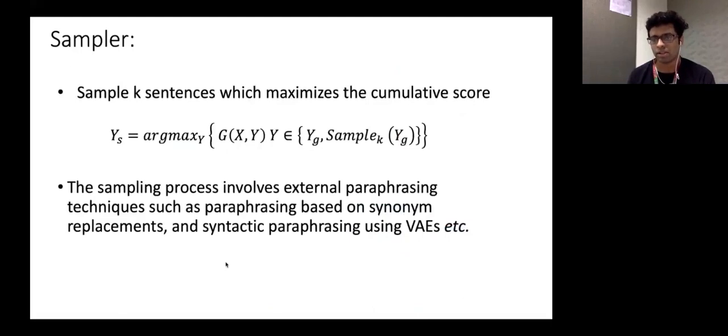So the sampler essentially samples k sentences with an objective to maximize the cumulative language score. And just to remind you, in our architecture, we use a very simplistic sampler, which takes the sentence and produces only lexical variants of the sentence. However, as the state of the art progresses, one can definitely use more complex forms of sampling strategies. For example, there has been some work on GANS-based sampling, and then there are obviously variational autoencoder based paraphrasers, which can be used for sampling as well.